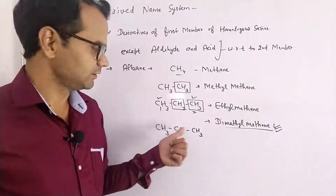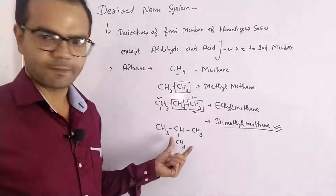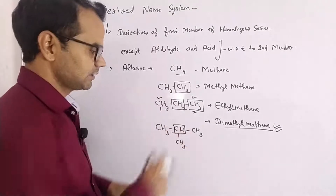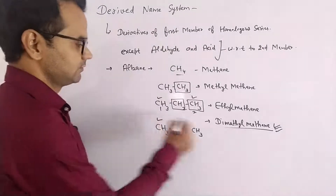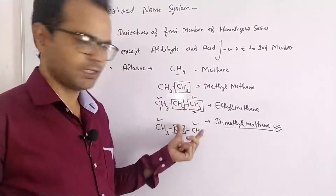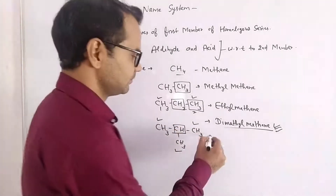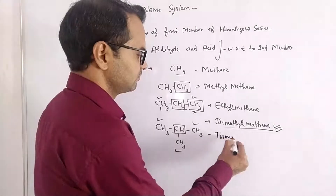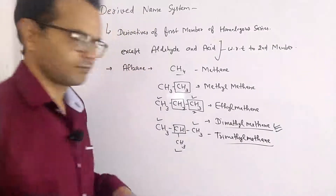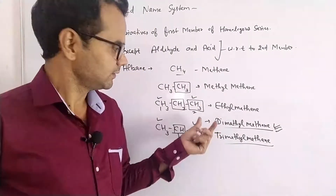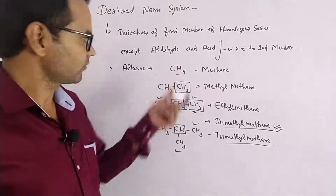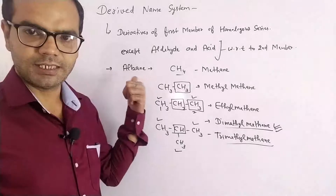For the next member, we take the maximum number of substituent groups. This is the carbon of methane with three substituent groups, so its derived name is trimethyl methane. The important rule is: take the maximum number of substituent groups if possible. That completes derived names for alkanes. Next is alkene.